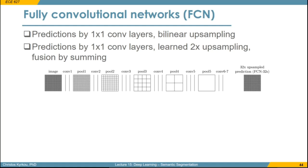Since the feature map was decreased by 32 times through the down-sampling process, you then do the prediction of the label for each pixel. This branch is called FCN-32 because it up-samples the feature map by 32 times. The problem is that since we're getting something quite deep in the network, we lose a lot of detail and spatial location information.